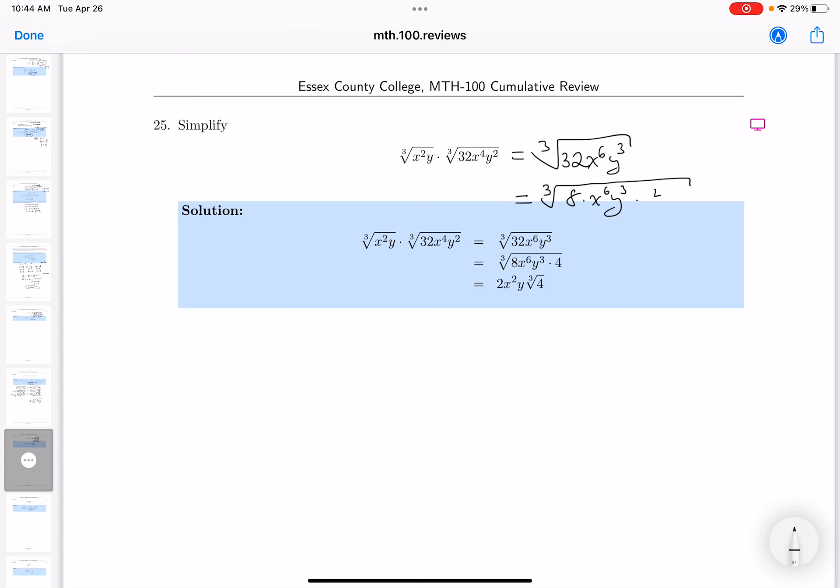We're left off with 8 times 4 would be 32. What's the answer? The cube root of 8 is 2. The cube root of x6 is x squared, and the cube root of y cubed is y, and you're left off with the cube root of 4.